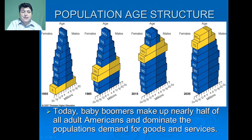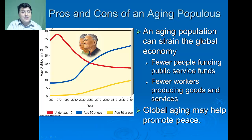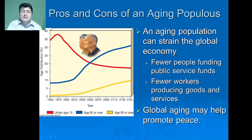When we examine the changes in age structure diagrams of the United States, we can see the introduction of the baby boomers in the 1950s. Today, the baby boomers make up half of all adult Americans and dominate our population's demand for goods and services. There are pros and cons to an aging population. A major negative is fewer people funding public services and fewer workers producing goods, straining the global economy. A major pro is that older populations are typically not interested in engaging in warfare, so global aging has the potential to help promote peace.